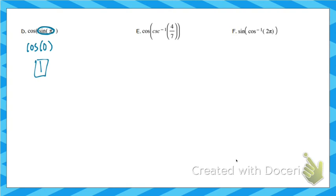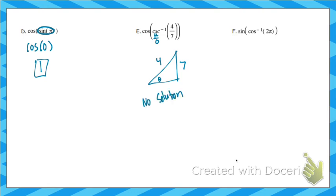This next one is another where we can draw a triangle. Cosecant inverse — cosecant is the reciprocal of sine, so it's hypotenuse over opposite. But here, can we have a triangle with a hypotenuse of 4 and an opposite of 7? No — that's not actually possible, since the opposite can't be larger than the hypotenuse. So there is no solution. If you tried this in a calculator, you would get an error.